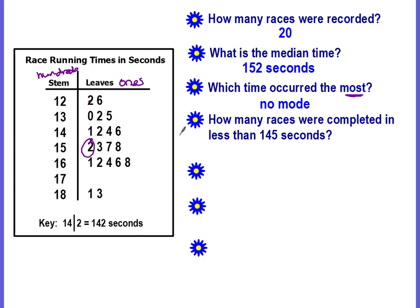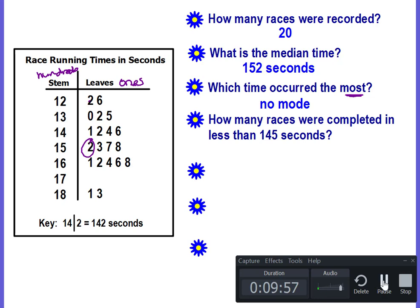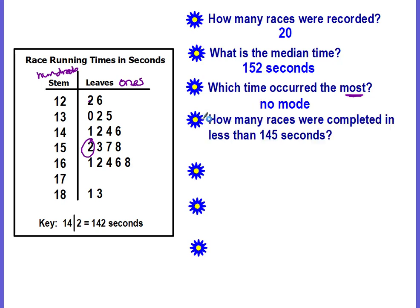How many races were completed in less than a hundred and forty-five seconds? First you need to find a hundred and forty-five seconds. We need a fourteen for our stem and a five for our leaf. Here's our fourteen stem — look for a five. There's not a five, but if there was, it would be right here. We want to know how many are less than that, so less than means numbers to the left and above: one, two, three, four, five, six, seven, and eight.